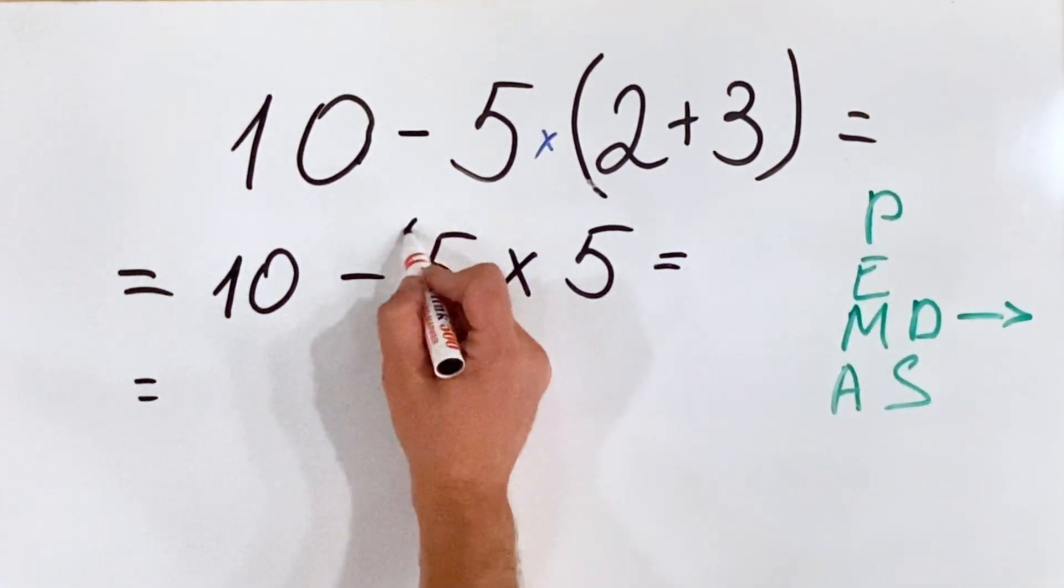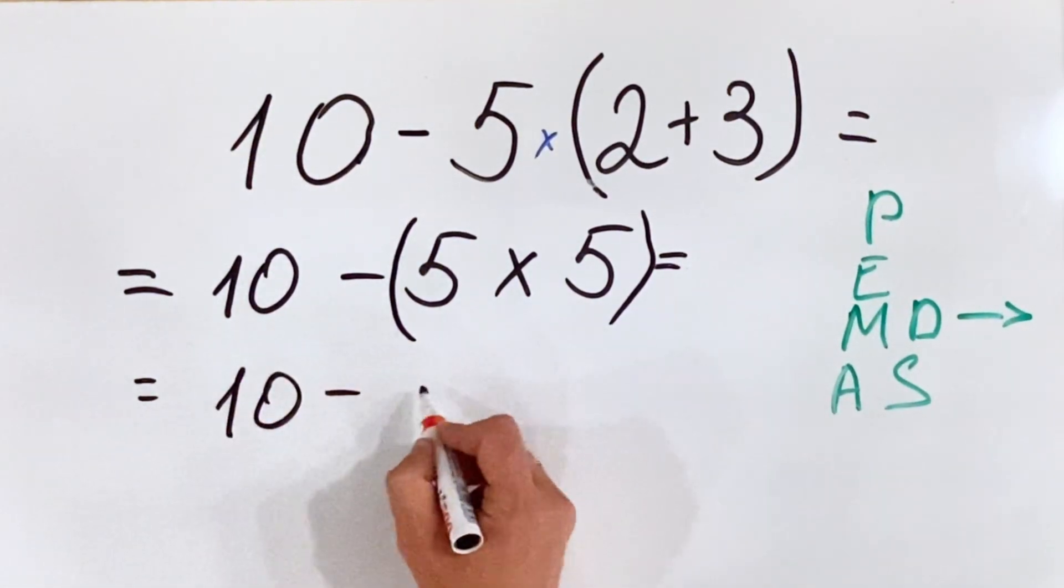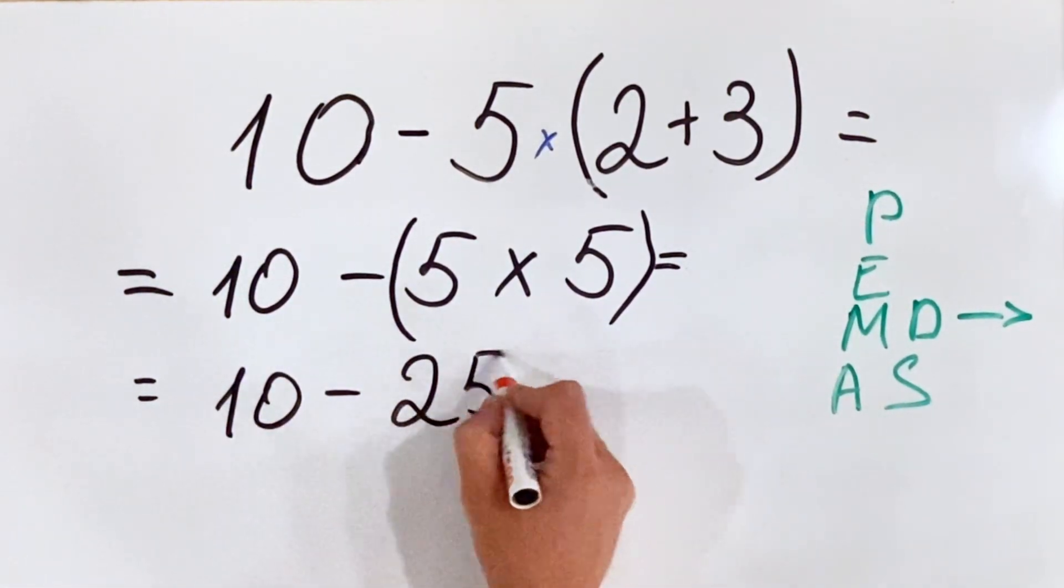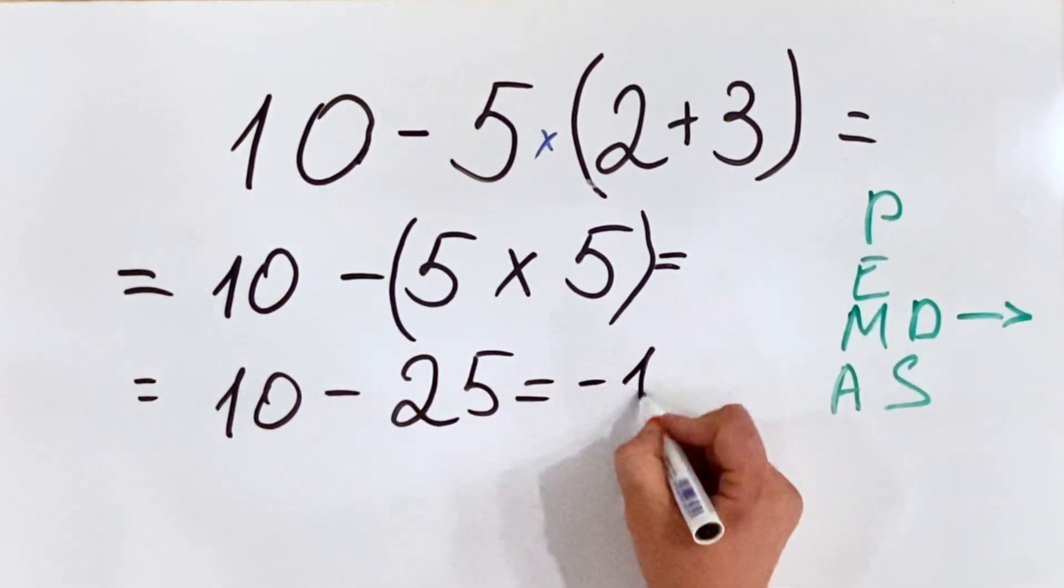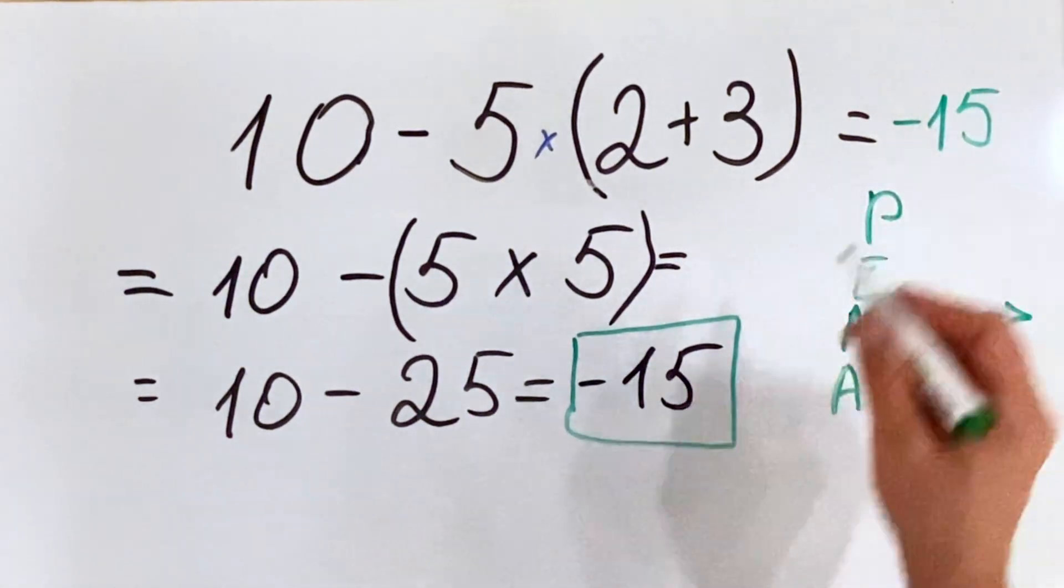To avoid confusion, you can put brackets. Then we have 10 minus 25, which equals minus 15. And this is the correct answer, minus 15.